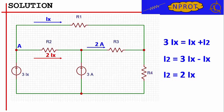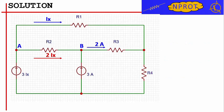We report the result just obtained in the circuit, indicating with 2 times Ix the current circulating in the branch of R2. Let us now focus on node B and also in this case we apply Kirchhoff's law of currents.